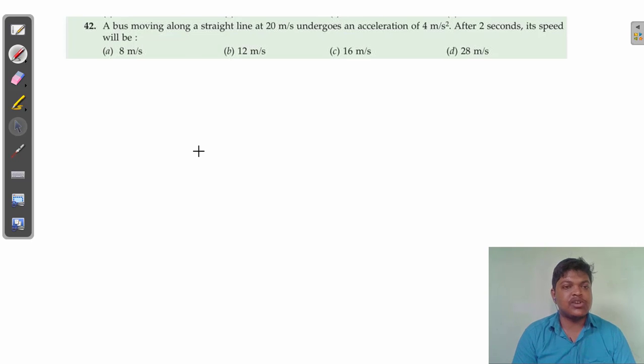Hello everyone. In this question, it is given that a bus is moving along a straight line at 20 meters per second and undergoes an acceleration of 4 meters per second squared. After 2 seconds, you have to find out the final speed. Whatever data is given in this question, we have to write it down first.